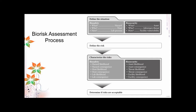Then we characterize the risk: what is the hazard likelihood — are you likely to get infected? What is the consequence of being infected? What is the likelihood that the hazard will escape the laboratory and spread outside, and what is the consequence if that happens? You then determine if the risk is acceptable or not. You also need to consider the capabilities of the facilities you currently have or plan to develop for doing the research.